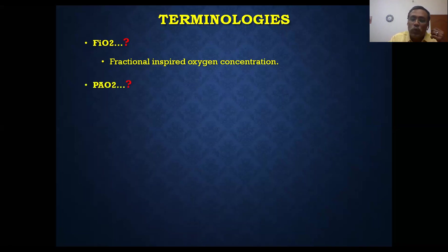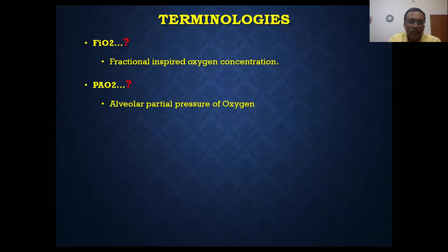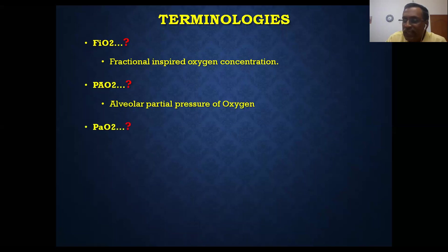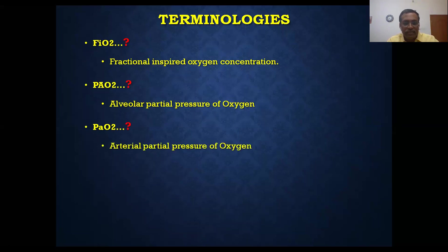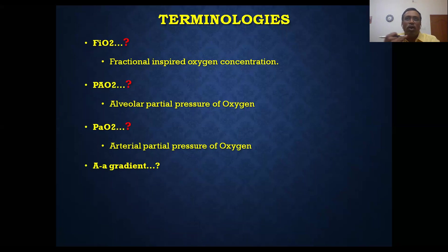Next terminology is PAO2, where the capital A stands for alveoli — so that is alveolar oxygen tension, PAO2. And next is PaO2 (small 'a') — that is the arterial partial pressure of oxygen tension in the arteries. There is a gradient between the alveoli and the artery.